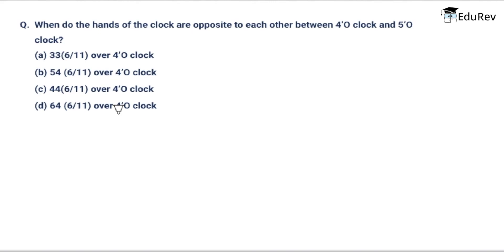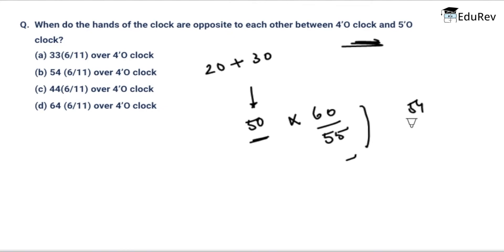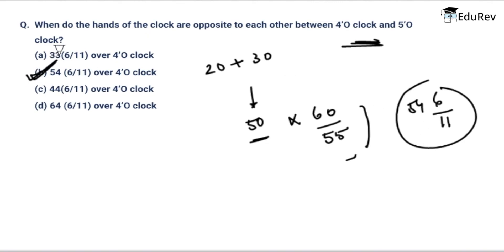When are the hands of the clock opposite to each other between 4 o'clock and 5 o'clock? At 4 o'clock the minute hand is at 12. To be opposite, the minute hand must cross 4 (20 minutes) and then travel 30 more minutes — gaining 50 minutes total. Since in one hour the minute hand gains 55 minute spaces over the hour hand, the total minute spaces gained for 50 minutes is 50 × (60/55) = 54 and 6/11. The correct answer is option 2, that is 54 and 6/11 minutes.